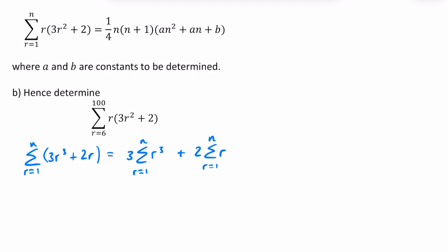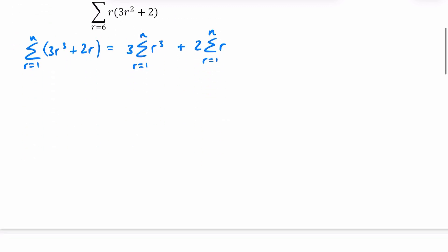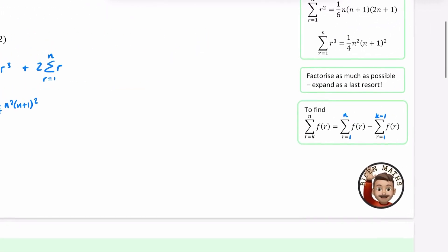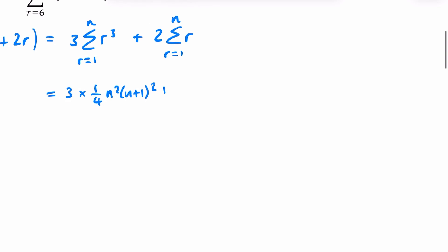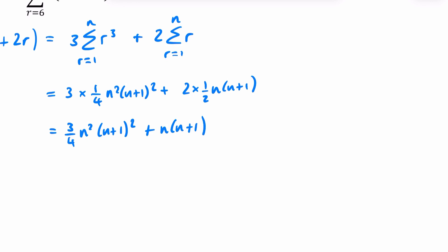Now that I have got it written in this form, I can go straight in and start saying what the formulae are going to be. For r cubed, it is going to be 3 multiplied by — the formula for r cubed is a quarter — and then multiplied by n squared times (n plus 1) squared. And then this one is 2 multiplied by a half, n(n plus 1). So we have three-quarters n squared (n plus 1) squared, and the 2 times the half cancels, leaving just n(n plus 1).